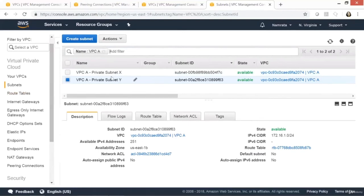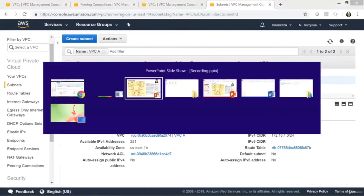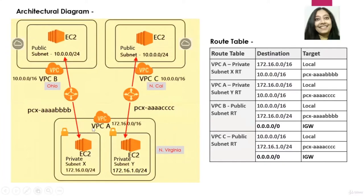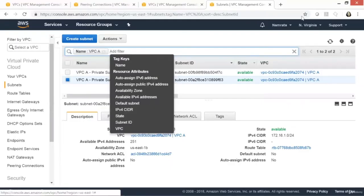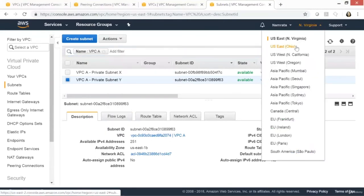Let's see the next VPC. Going back to our diagram: we created VPC A, Subnet X in VPC A, and Subnet Y in VPC A. We are yet to create the route tables but will get there shortly. The next thing is to create VPC B and its public subnet. Let me switch back to AWS and change regions to US East Ohio.